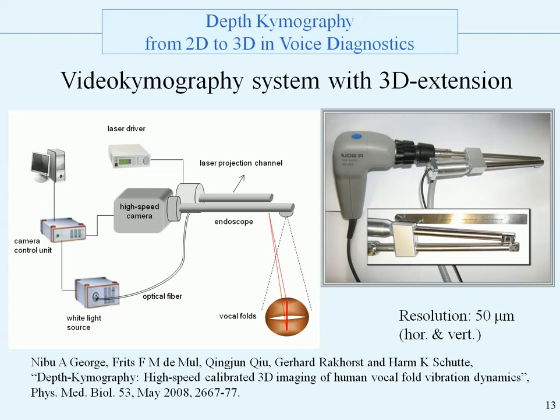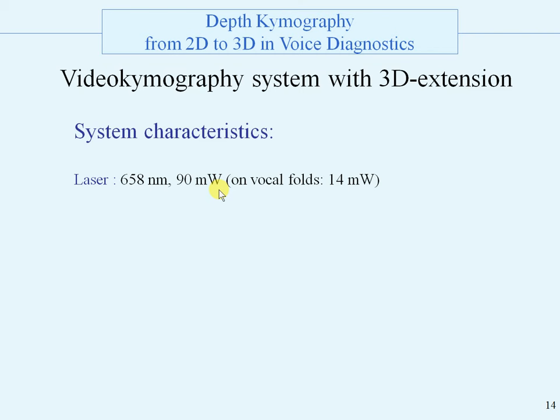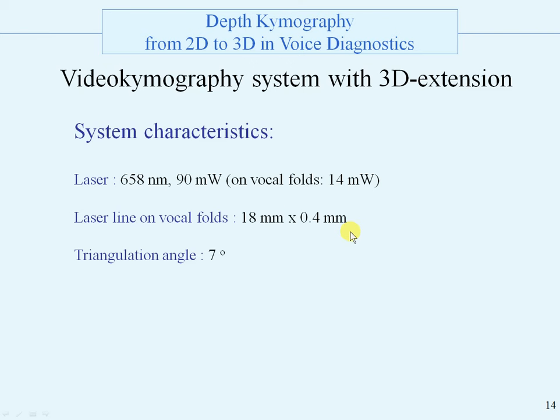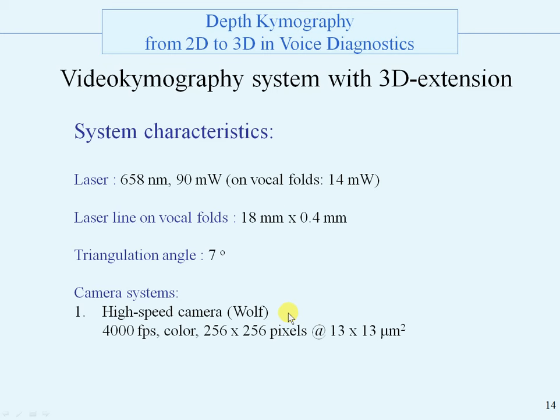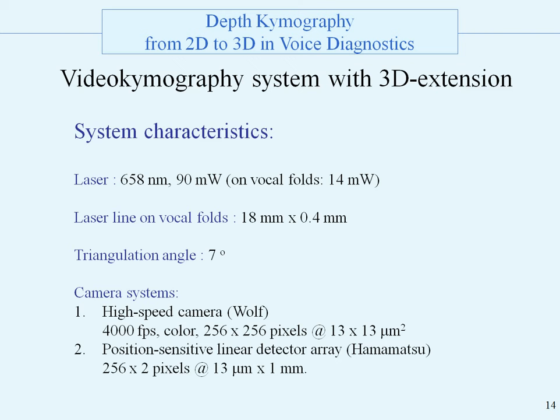Some system characteristics: we use a red laser of 19 milliwatts, and on the vocal folds it is 14 milliwatts. The laser line on the vocal folds has a length of 18 mm × 0.4 mm. The triangulation angle is 7 degrees, and we use two camera systems: the high-speed camera used with the 2D system, and a position-sensitive linear detector array using proper filtering. The linear detector array and the high-speed camera can be combined.